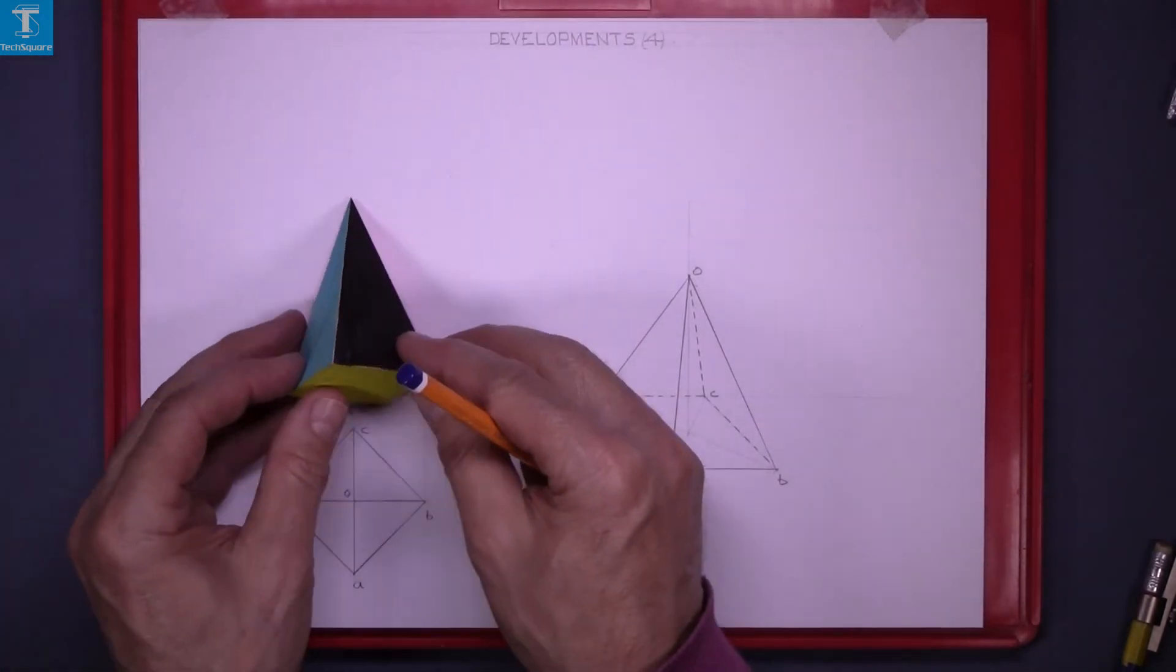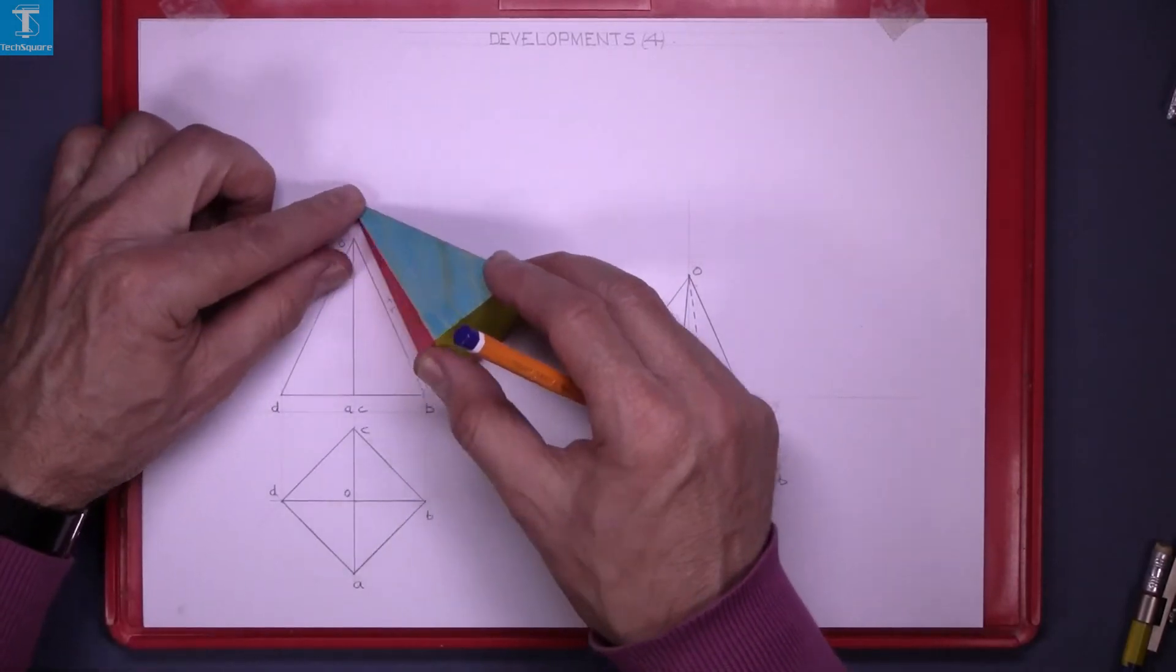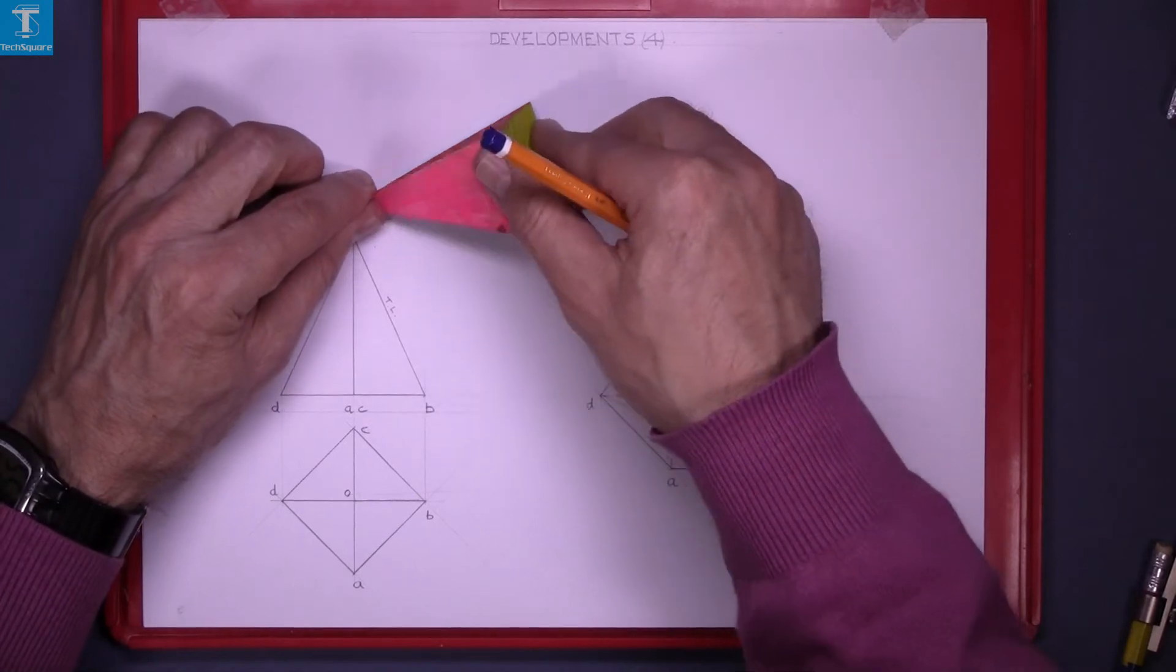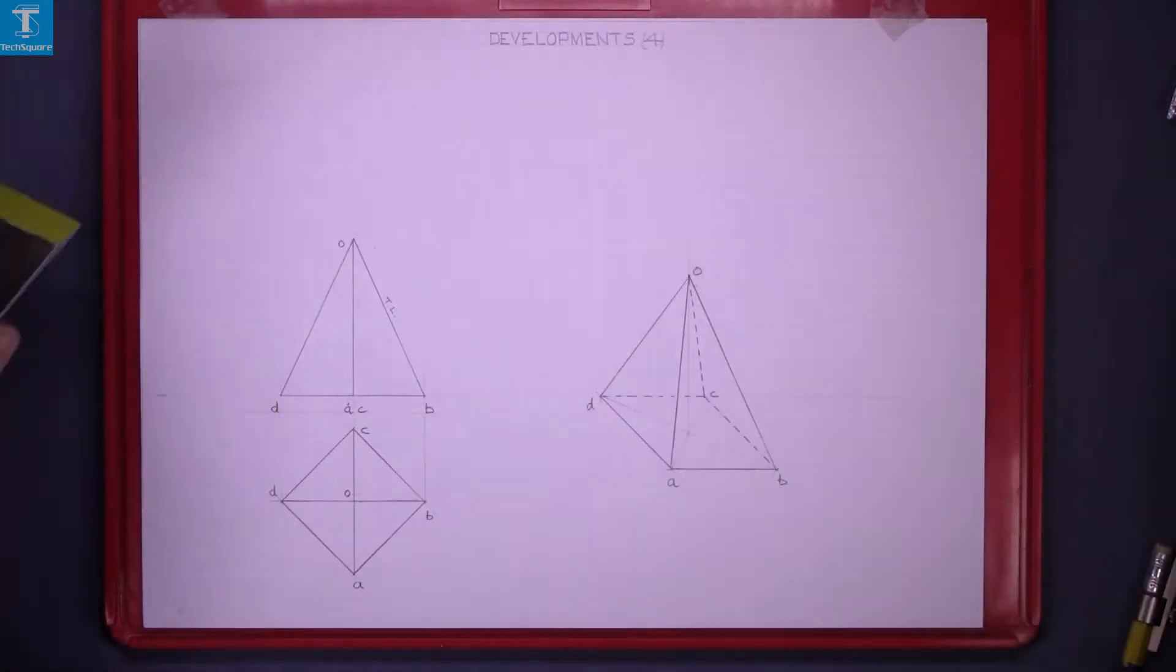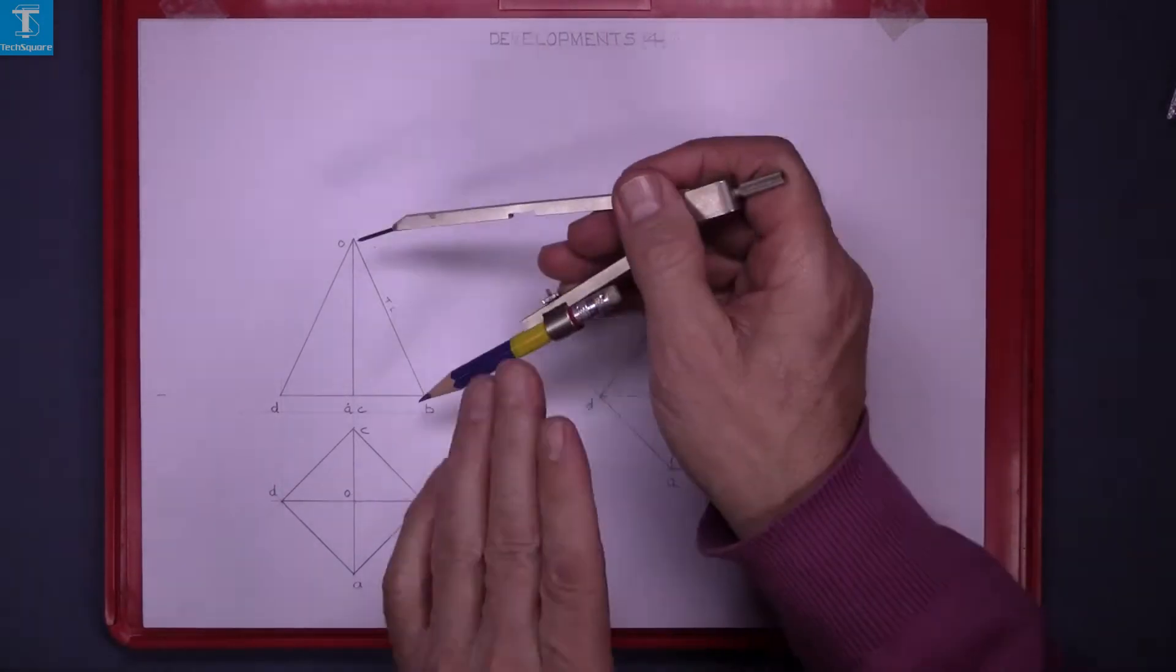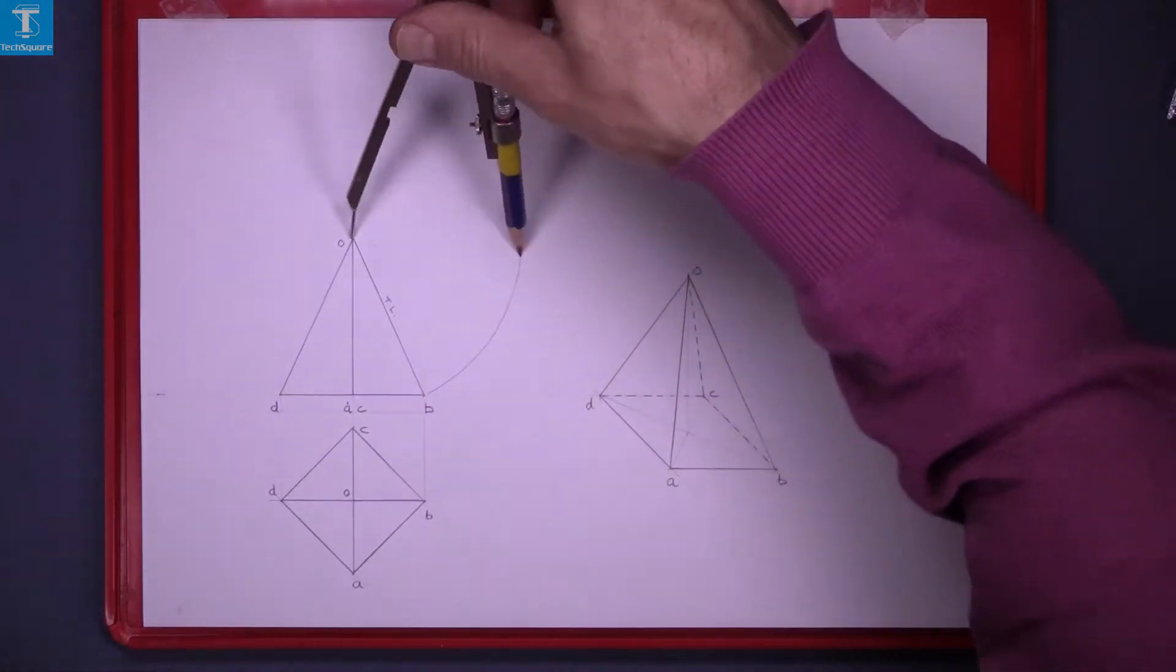Now when we go to draw the development of this, what I plan to do is to rotate it around so that we get the four surfaces around in a circle like that. To do that, put the point of the compass in the top of the pyramid and draw an arc.